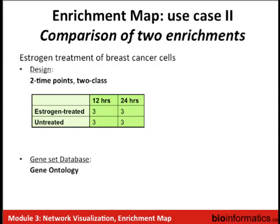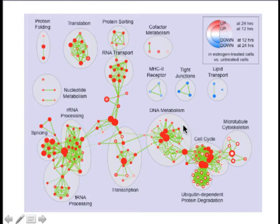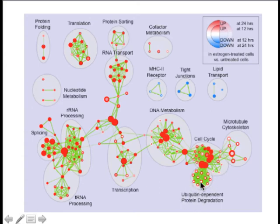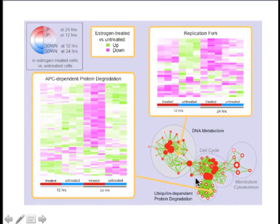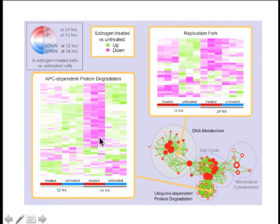Here's an example with two time points. Just like in Cytoscape, the enrichment score at the early time point is mapped to the center of the node and the enrichment score at the late time point to the border. Most nodes are all red or all blue — meaning pathways are enriched in both time points. But a couple of pathways like ubiquitin-dependent protein degradation are only enriched at the late time point. You can look at the heat map if you load your expression data into Enrichment Map — this particular pathway shows similar expression in treated and untreated at the early point, but very different expression at the late time point.